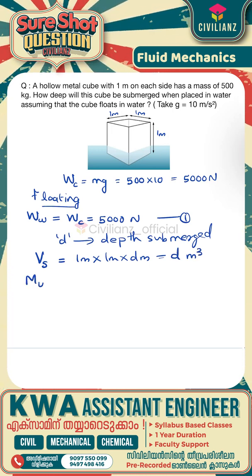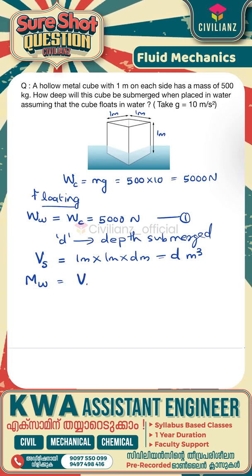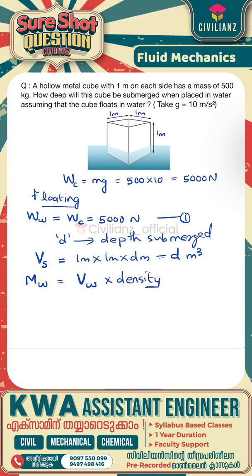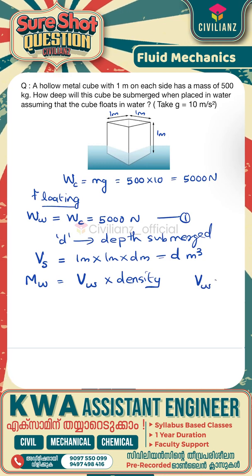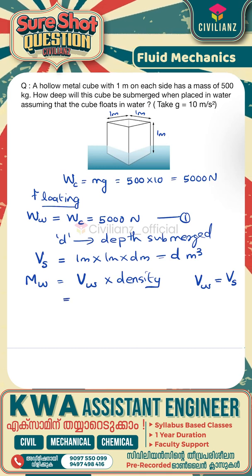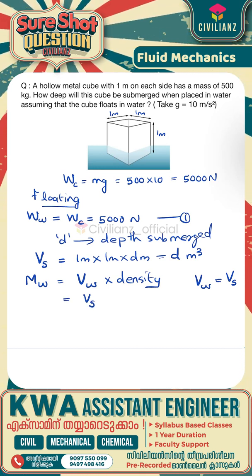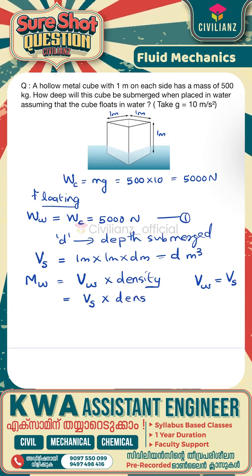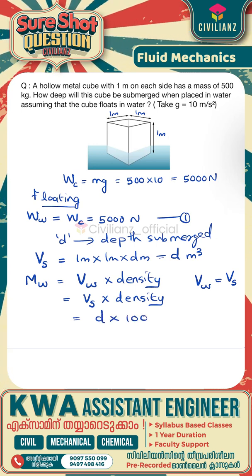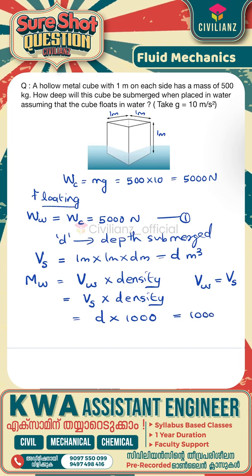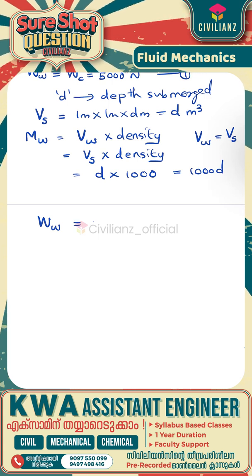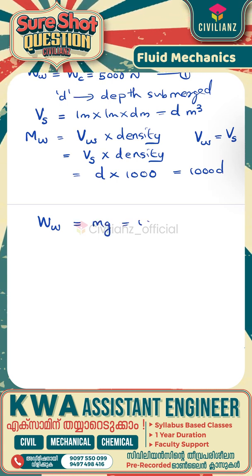Mass of water displaced will be equal to volume of water displaced multiplied by density of water. The volume of water displaced will be equal to the volume of the portion of the cube which is submerged, so mass of water displaced is equal to volume of submerged portion multiplied by density, which is equal to D into 1000 — that is 1000D.